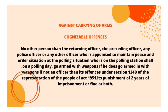Regarding carrying of arms — cognizable offense: no person other than the returning officer, presiding officer, any police officer, or any other officer appointed to maintain peace and order at the polling station on polling day may go armed with weapons. If any other person goes armed with weapons, it is an offense under Section 134B of the Representation of the People Act 1951. The punishment is two years' imprisonment, or a fine, or both.